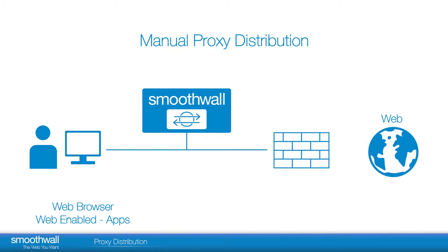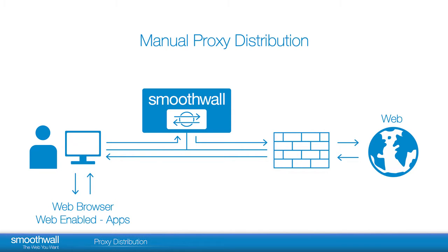Manually, proxy settings can be entered manually in most web browsers and web-enabled applications. Usually, such settings are entered as part of the application's connection settings or similar. The address of the proxy is required, along with the proxy port number. These settings are displayed on WebProxy's Settings page. An admin or user must configure the browser to use the SmoothWall as a proxy. Normal browsing continues through the SmoothWall with the provided settings.